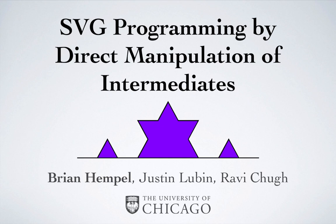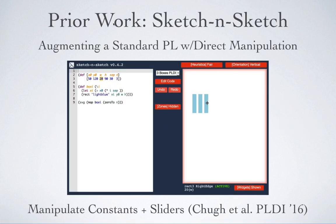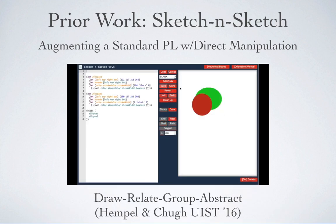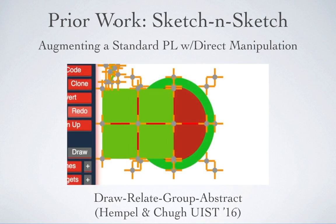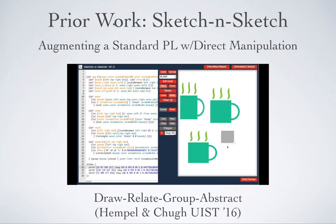In this work, we continue investigation of the question of how much direct manipulation you could add to a traditional text-based functional programming workflow. We build on the Sketch & Sketch Vector Graphics Editor. In prior work, Sketch & Sketch allowed you to manipulate your output to change constants in the program. And later, Sketch & Sketch was augmented so that you could also perform some program construction in the output: drawing shapes, aligning shapes together, as well as duplicating, grouping, and making some abstractions of your shapes.